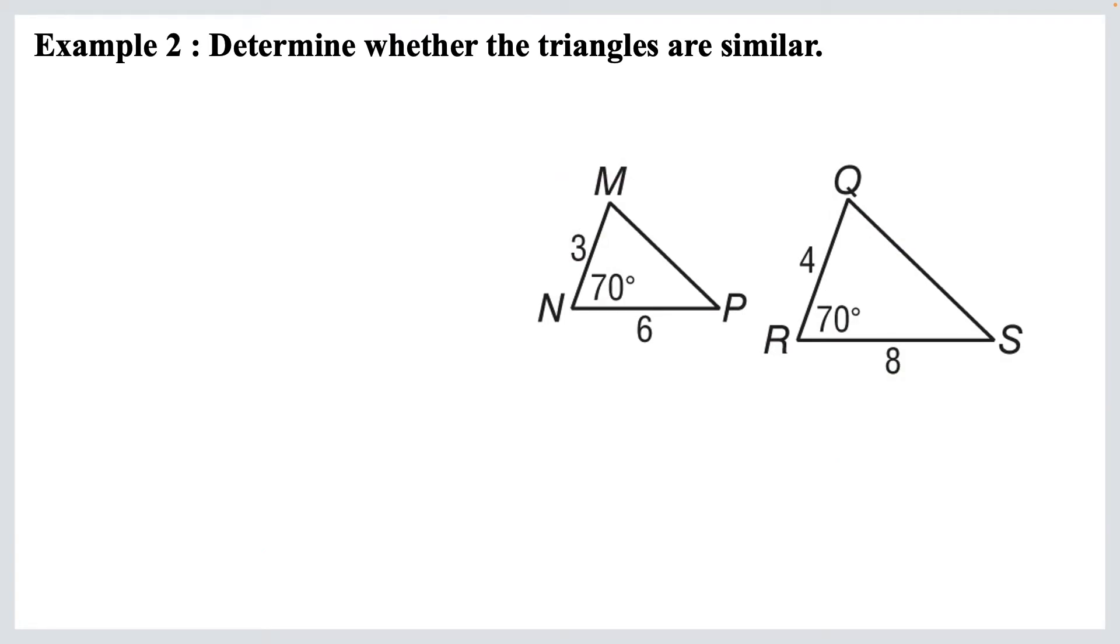Next one. Now we're looking at two more triangles. We've got some sides. We've got an angle. Okay, let's first check to see if the pairs of sides are proportional, just like we did before. So we're going to find the matching sides. Three partners with four. So we've got MN over QR. That's three over four.